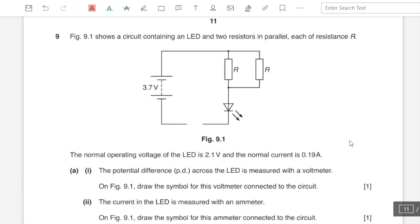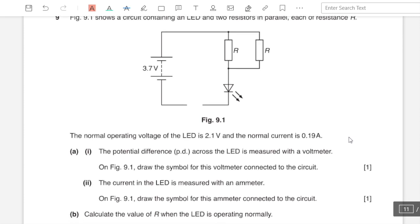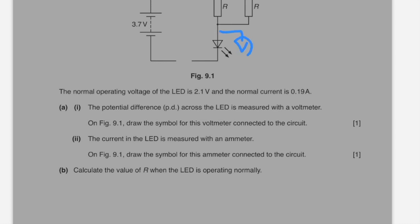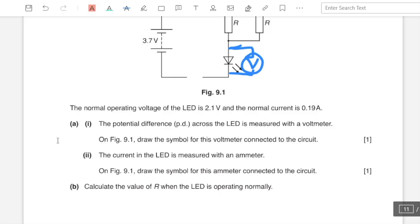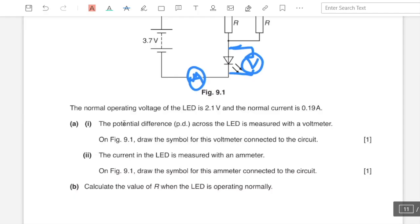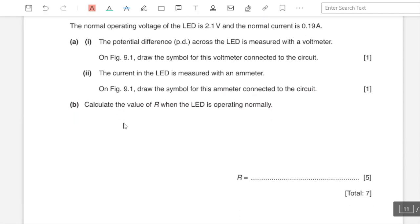Question number nine: figure 9.1 shows a circuit containing an LED and two resistors in parallel, each of resistance R. Normal operating voltage of the LED is 2.1 volts and the normal current is 0.19 ampere. Part a1: the potential difference across the LED is measured with a voltmeter. On figure 9.1, draw the symbol for this voltmeter connected to the circuit. The voltmeter is supposed to be connected in parallel. Part a2: the current in the LED is measured with an ammeter. Draw the symbol for this ammeter connected to the circuit.